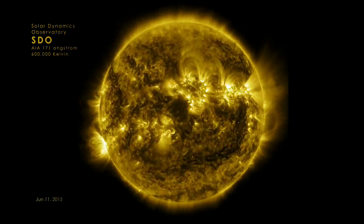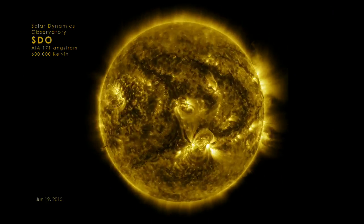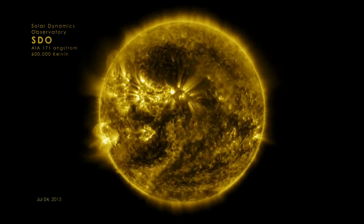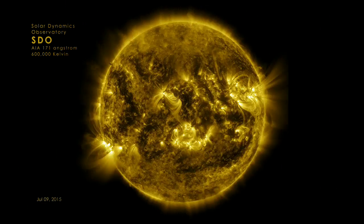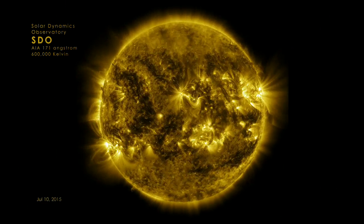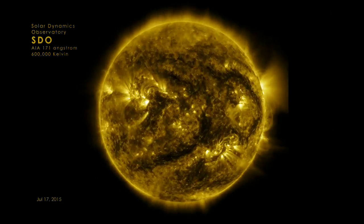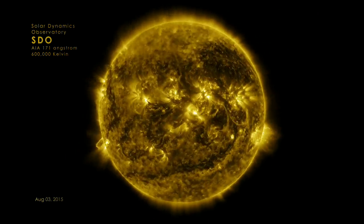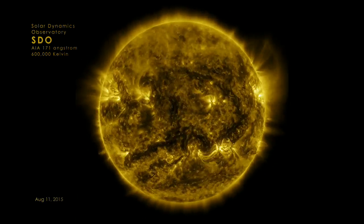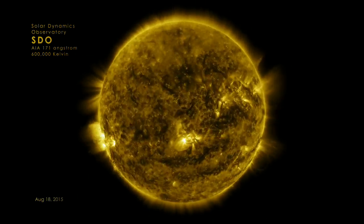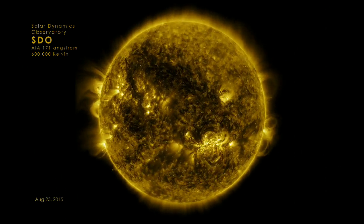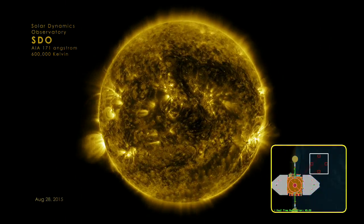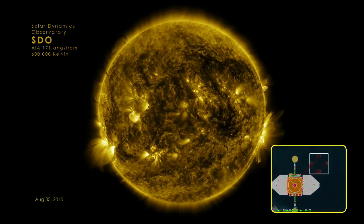We're seeing the sun rotate so quickly in this movie because it's time-lapsed. When the sun jumps around, that's actually the Solar Dynamics Observatory moving around and pointing in different directions. Sometimes they have to point away from the sun so they can calibrate their sensors, the cameras. When we see the frames go dark, that's when the Solar Dynamics Observatory, which is orbiting the earth, goes behind the earth and the earth is between the Solar Dynamics Observatory and the sun — and so the earth eclipses the images.